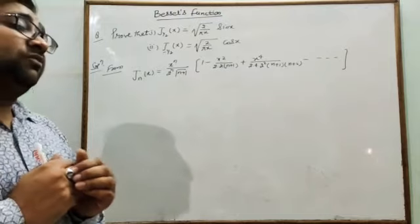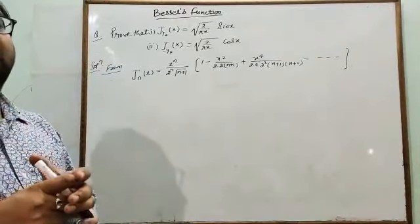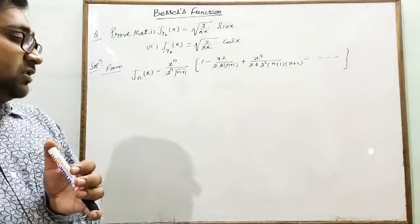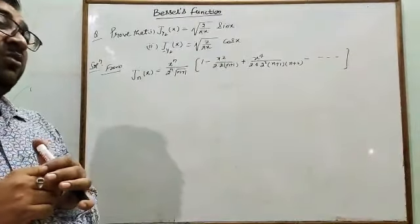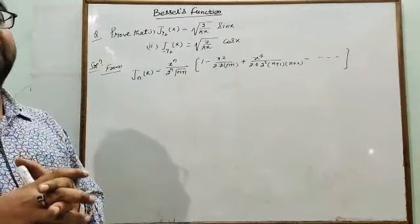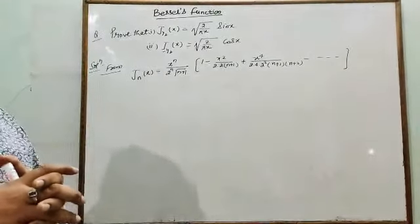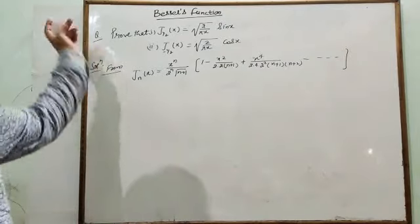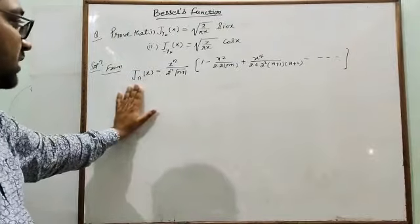What is Bessel's equation? It is: x² d²y/dx² + x dy/dx + (x² − n²)y = 0. A regular singular point exists, so we can apply Frobenius method. After applying Frobenius method, we get the series solution of Bessel's equation, and this series solution is known as Bessel's function, represented by J_n(x).